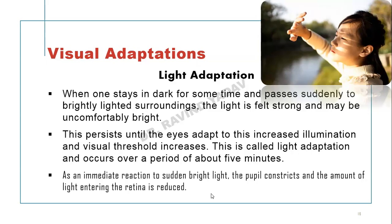Light adaptation: when a person enters a bright light room from a dark room, it causes the conversion of the photosensitive rhodopsin pigment to scotopsin or photopsin, along with all-trans retinal changes. This persists until the eyes get adapted to the increased illumination and the visual threshold increases. This is called light adaptation, and it can take over 5 minutes to get fully adapted. As an immediate reaction to sudden bright light, our pupils will constrict, reducing the amount of light entering the retina.